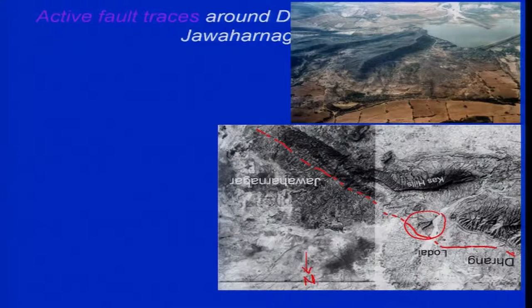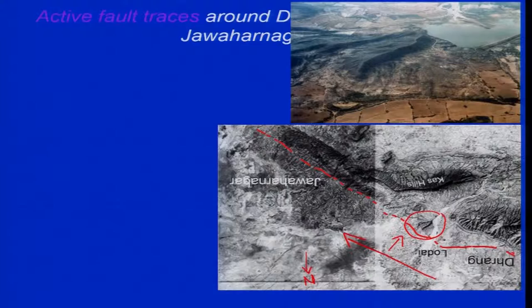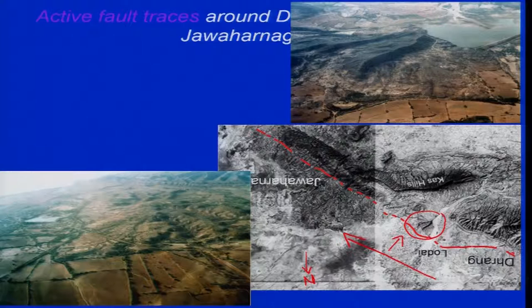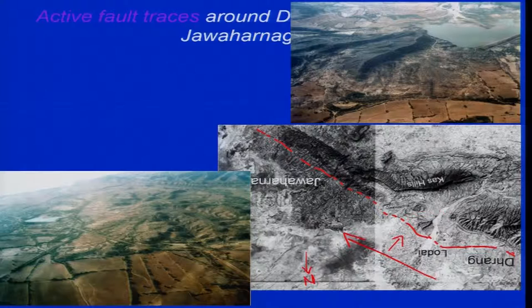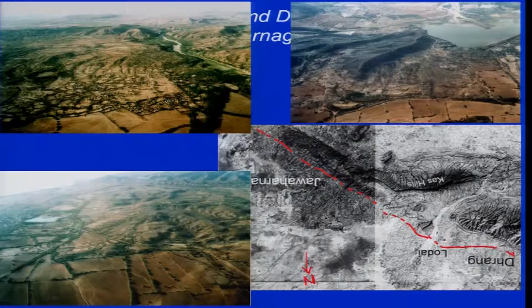We flew in this direction viewing the terrain like this — this was a low oblique aerial photo. Now here is a slightly high angle or high oblique aerial photograph because you are able to see the horizon. These are two different photographs taken along the flight. This portion is over here near Jawaharnagar, and again we are able to see the horizon.